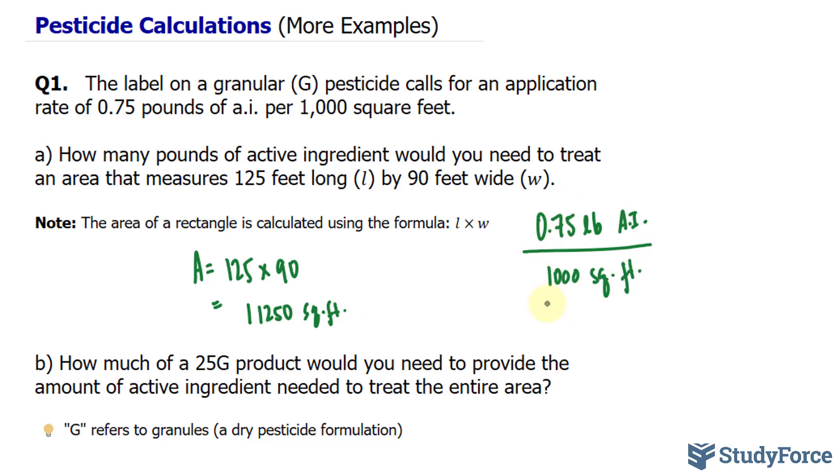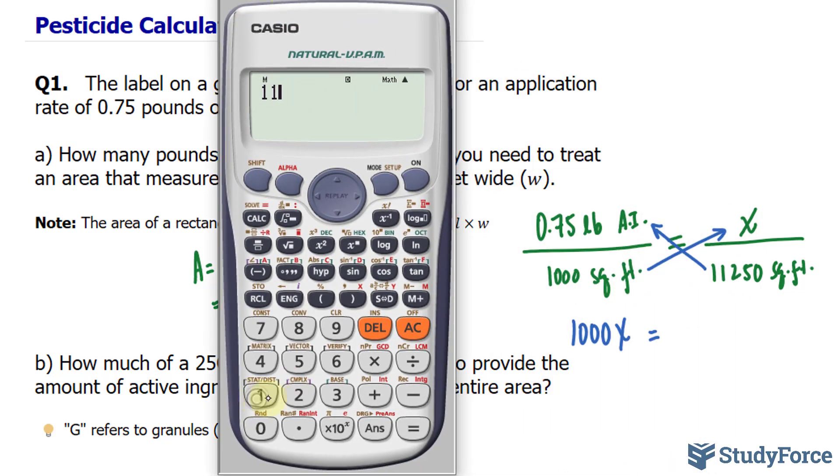We have the rate, and we want to find out how many pounds of active ingredient. What we'll do from here is create a proportion such that I'll write down another ratio next to this one, where I will fill in the bottom, which represents the area, and the top is how much active ingredient we need. Just like how we did in the other examples that I showed for the pesticide calculations, we cross multiply to find for x. That's our unknown, it represents how much AI we need. We'll multiply 1,000 times x, and we'll ignore the units for now. So 1,000 times x is simply 1,000x. Then we cross multiply again. We'll take that amount and multiply it to 0.75. You can use your calculator for this. So 1,000x, and we end up with an output of 8,437.5.